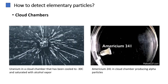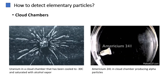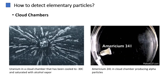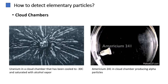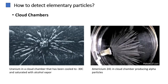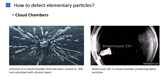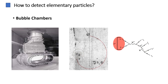A cloud chamber is a device that allows the visible tracking of charged particles by creating a supersaturated vapor. As charged particles pass through, they create trails of tiny droplets, making their path visible. Similarly, bubble chambers detect charged particles as they pass through a superheated liquid, creating trails of bubbles along their paths.